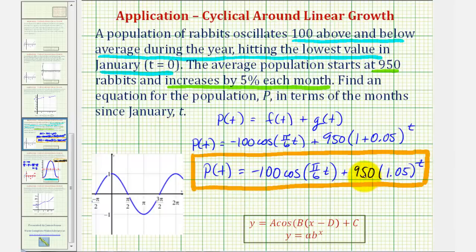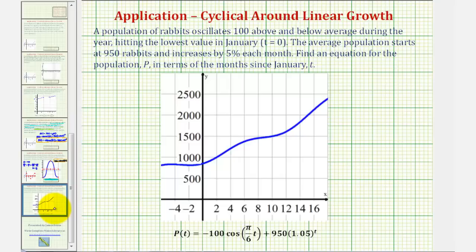Before we go, let's take a look at this graph. Here it is. Notice how the general trend is exponential growth, but we can also see the oscillation of 100 above and below the average throughout the year. I hope you found this explanation helpful.